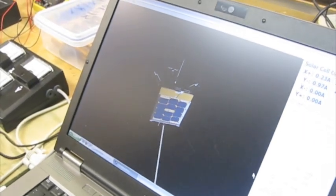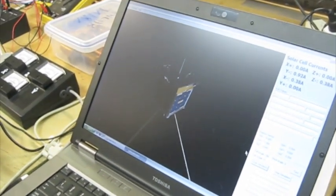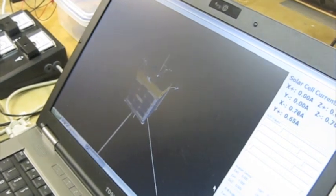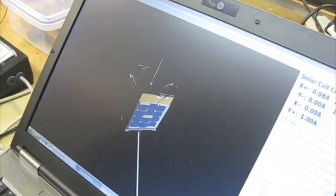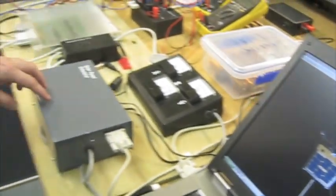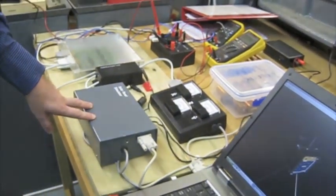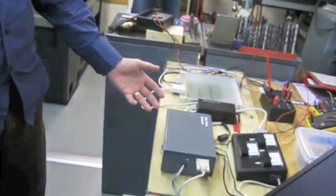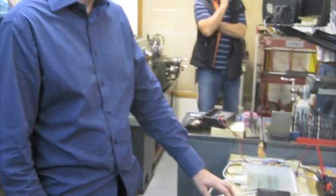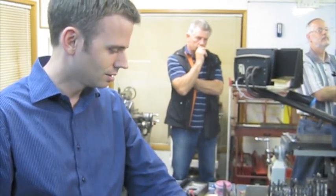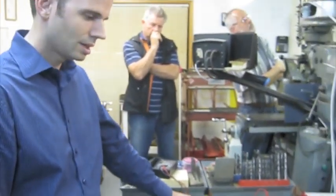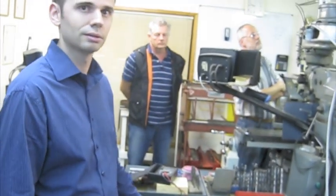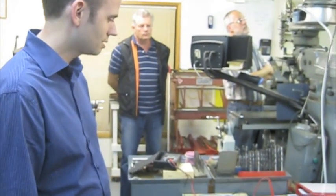So here on the PC, we're running some software that is a graphical simulation of KiwiSat. And the PC program is sending serial commands to a microcontroller in this box here. And the microcontroller interprets the serial commands which represent the current levels coming out of the solar cells, and drives some current generators, which then pass the current through to the BCR. And the whole purpose of this is to simulate the solar cells to the BCR, so that we can exercise the BCR on the ground here.